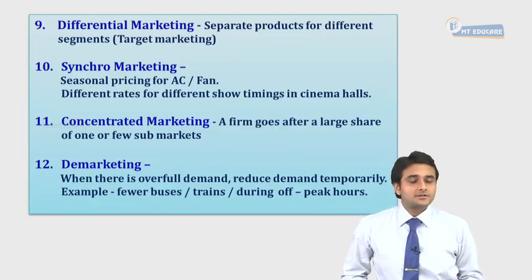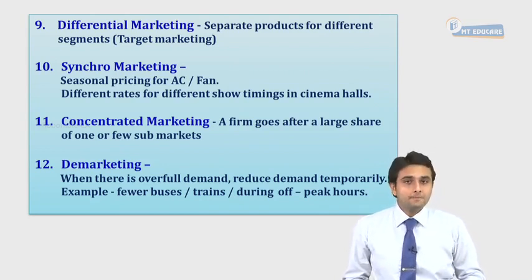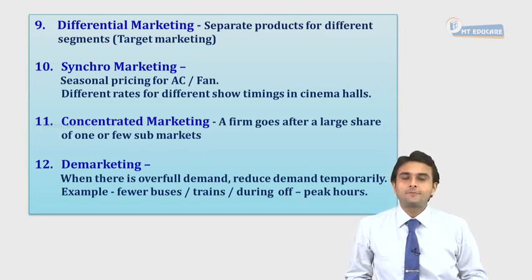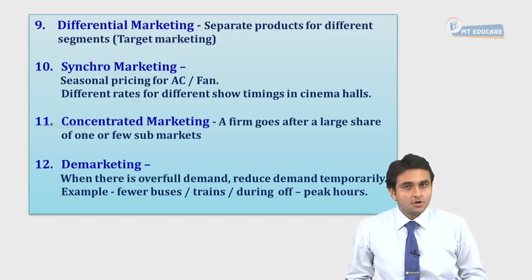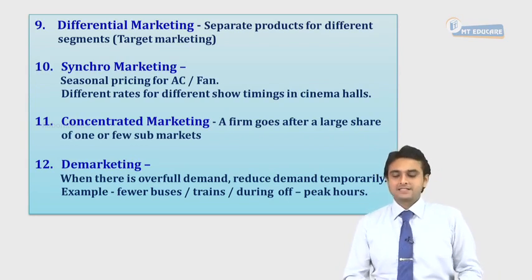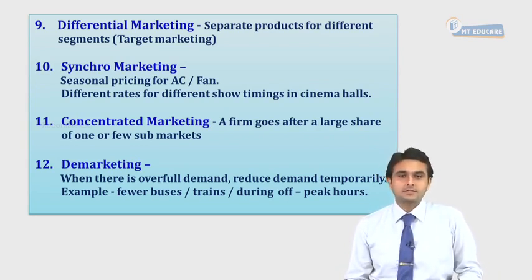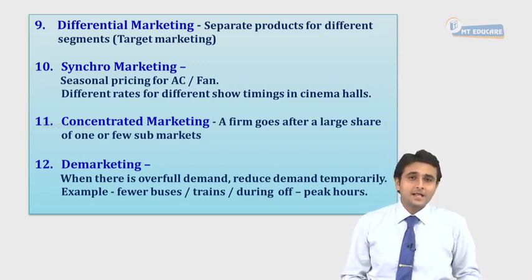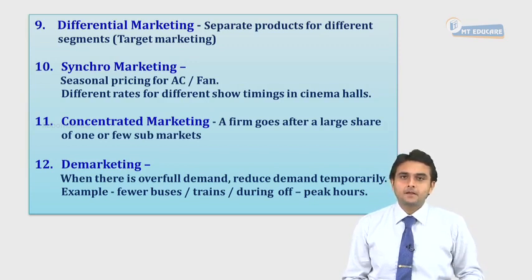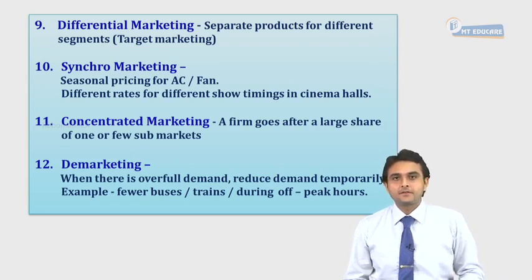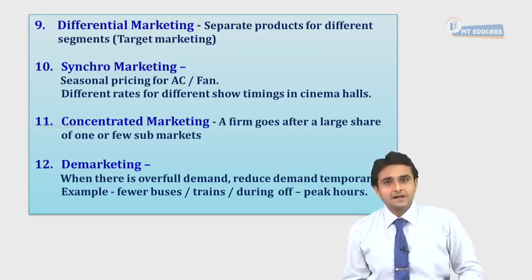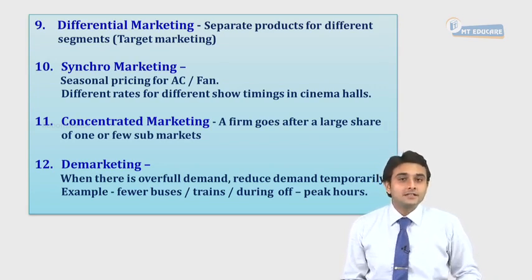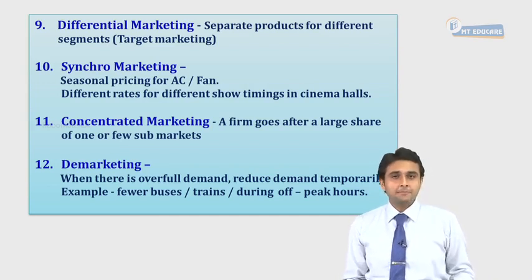Differential marketing, also referred to as target marketing, is where a business goes after different consumer segments to promote its different categories of products. For example, Hindustan Unilever Ltd makes soaps ranging from Lifebuoy to Lux to Pears and Dove — Lifebuoy is positioned as protection against germs, Lux for enhancing yourself, Dove as a pure skincare product, and Pears with glycerine as the differentiating factor. This is an example of differential marketing.